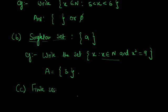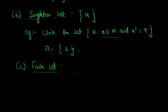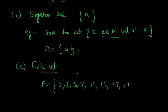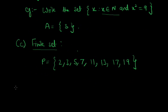The third type of set is the finite set. A finite set is a set which contains a finite or countable number of elements. For example, the set of all prime numbers less than 20 — {2, 3, 5, 7, 11, 13, 17, 19} — is a finite set because we can easily count its elements. Similarly, the set of all natural numbers less than 100 is also finite because all elements are countable.